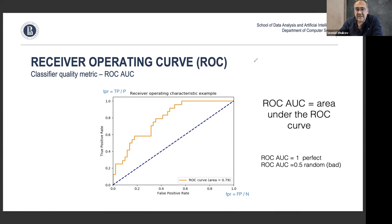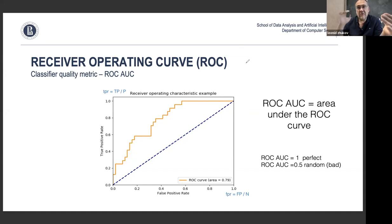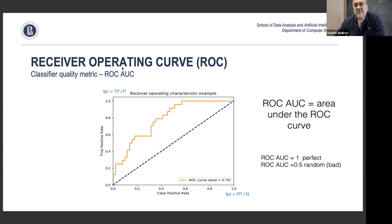The AUC measures how well your classifier operates independently of the dataset. The closer the AUC is to 1, the better the classifier. As a data scientist, you then select a specific point on this curve — choosing the threshold that sets a particular level of sensitivity for your classifier, balancing the true positive and false positive rates for your specific problem.